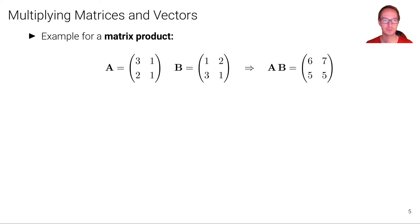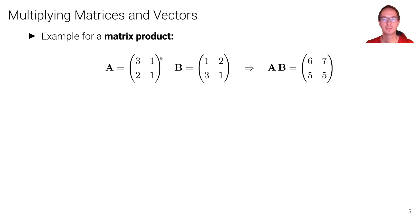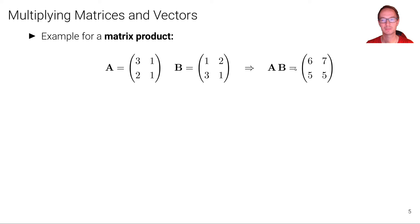Here is an example for a matrix product. We have matrix A: 3, 1, 2, 1, and matrix B: 1, 2, 3, 1. The product is 6, 7, 5, 5. Let's look at one entry: why 6? We consider the first row of A and the first column of B. We multiply 3 by 1 and 1 by 3, giving 3 plus 3 equals 6. For the second element in the first row, we have 3 times 2, which is 6, plus 1 times 1, which is 1, giving 7.